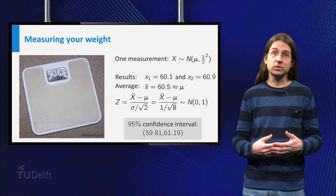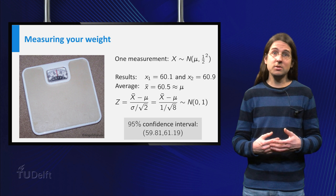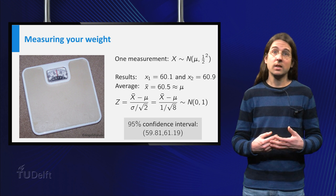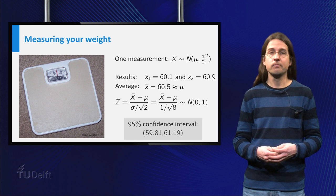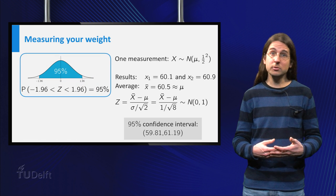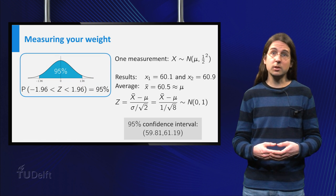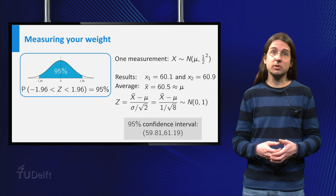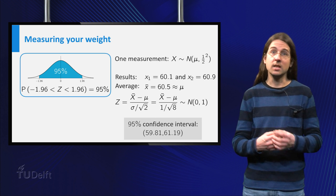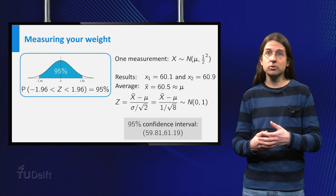Therefore z equals the square root of 8 times the average minus mu has a standard normal distribution. From a table of the normal distribution you can read off that the probability that z is between minus 1.96 and plus 1.96 equals 95%.